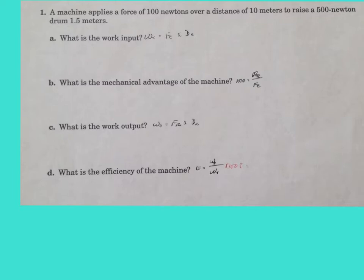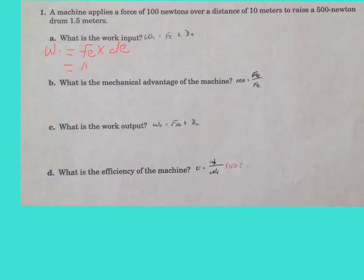This is a classic example asking several different types of questions concerning a simple machine. For part A, what is the work input? Work input equals the effort force times the effort distance. Our effort force is 100 newtons and our effort distance is 10 meters, so we get 1,000 newton meters as our work input.